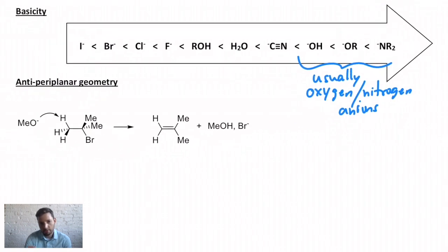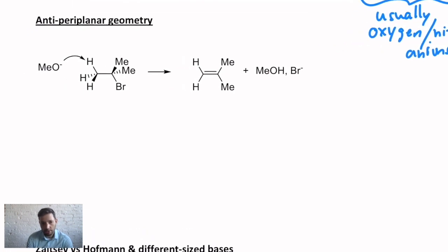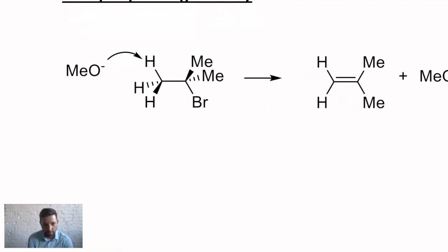So there's some stereochemical consequences of the E2, kind of like how we had the inversion of stereochemistry with the SN2. There's other stereochemical features of the E2. Number one, the hydrogen that you take away, which is beta to the leaving group, has to be oriented in an anti-periplanar geometry with respect to the leaving group.